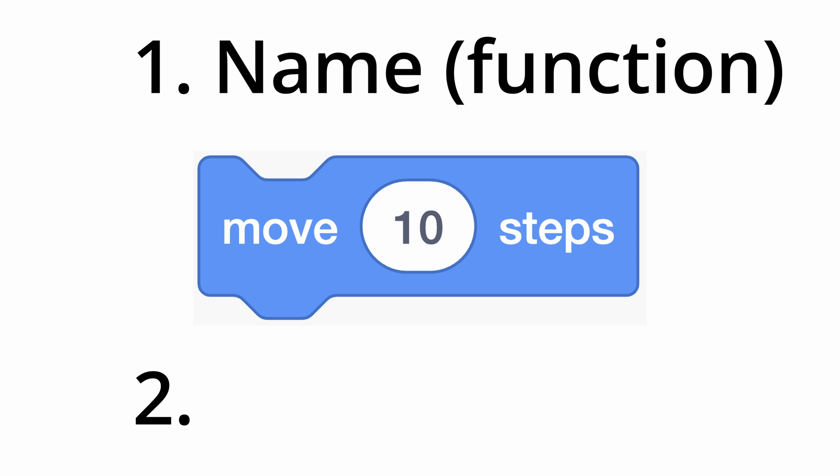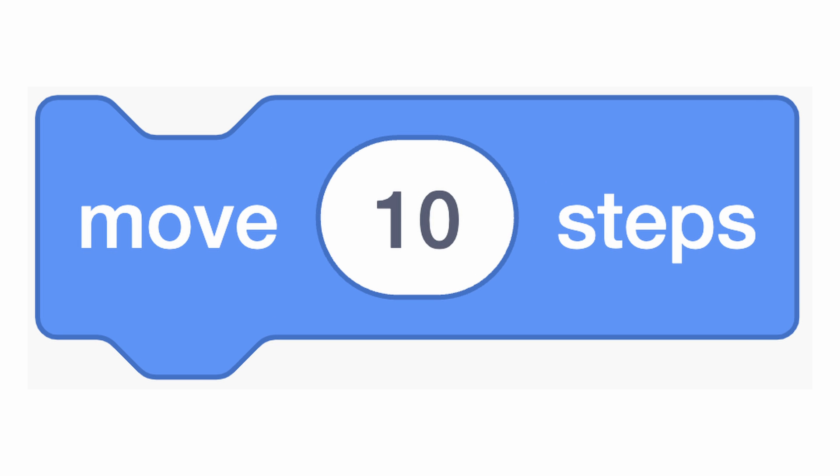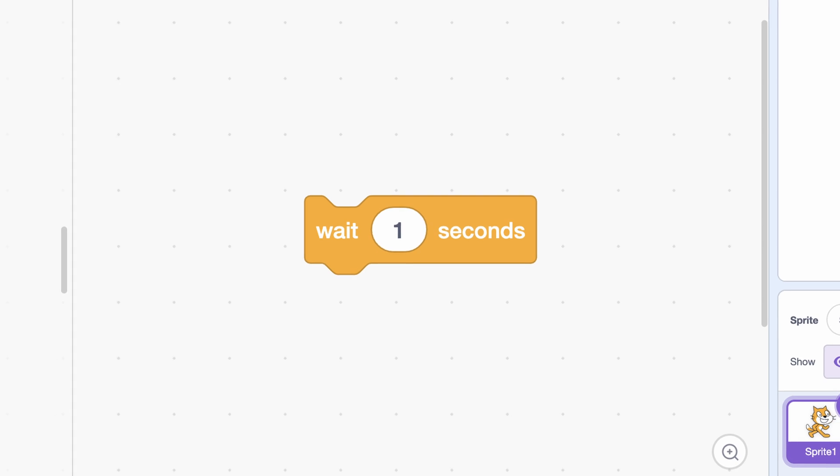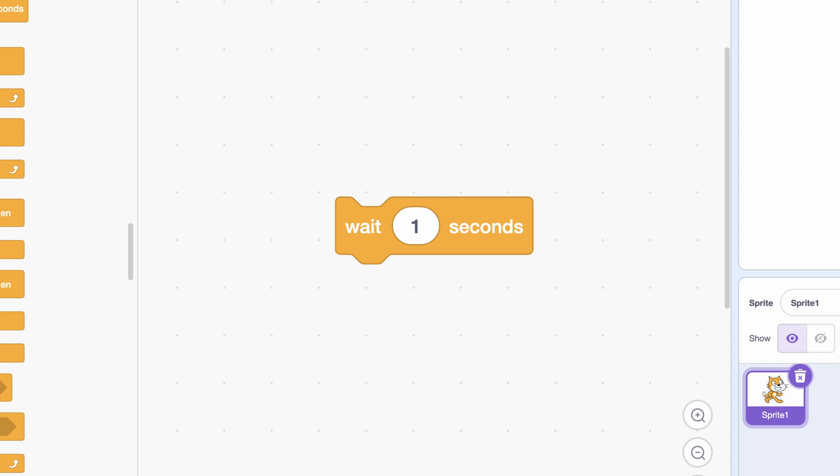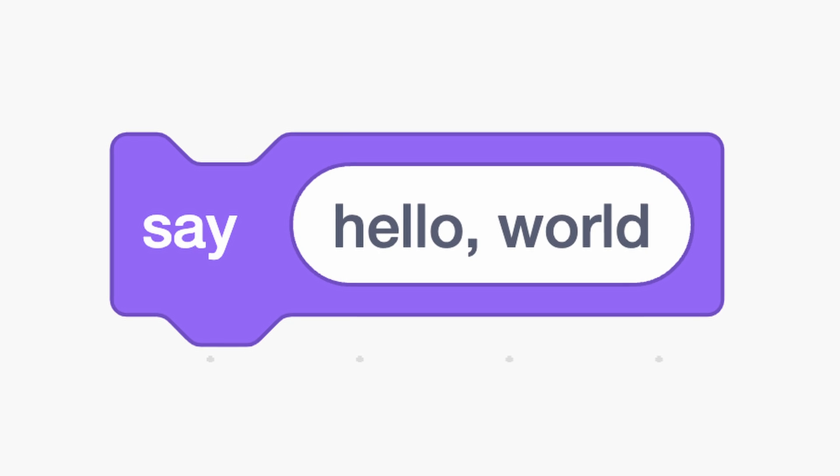The second component of a Scratch block is a white bubble. In this bubble, you can type certain values which customizes what the block does. For example, you can make your code wait one or five seconds, or say whatever you want.